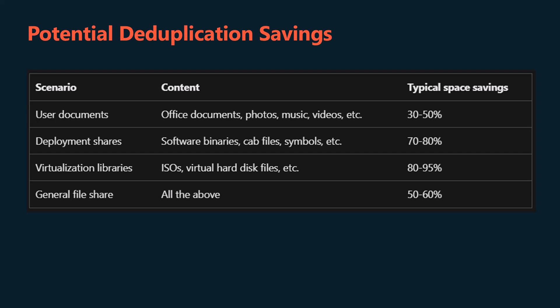The space savings you can gain from data deduplication depend on the data set or workload on the volume. Data sets that have high duplication could see optimization rates of up to 95%, or a 20 times reduction in storage utilization. The following table highlights typical deduplication savings for various content types.